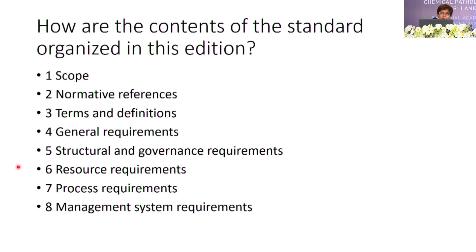In the new standard, the contents are organized differently. In the earlier 2012 edition, there were only five sections. Sections one, two, and three are the same: scope, normative references, and terms and definitions — though the terms and definitions are far more numerous now. We now have eight sections total, with general requirements, structural and governance requirements, resource and process requirements. Management system requirements, which were clause four in the third edition, have now been brought to number eight — aligning with ISO 17025.